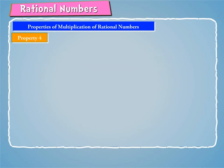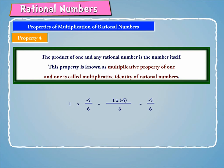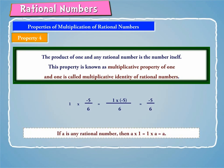Property 4: Let us consider an example. 1 into minus 5/6 is equal to minus 5/6. Hence, the product of 1 and any rational number is the number itself. This property is known as the multiplicative property of 1, and 1 is called the multiplicative identity of rational numbers. Thus, if A is any rational number, then A into 1 is equal to 1 into A, which equals A.